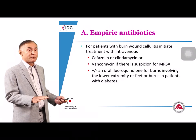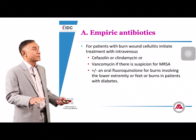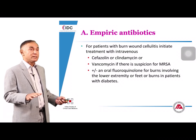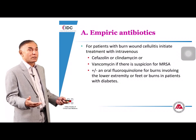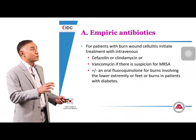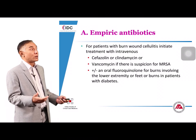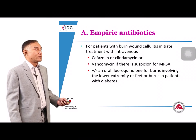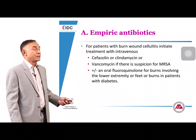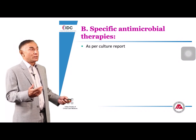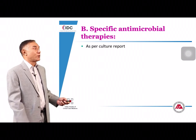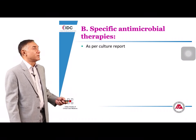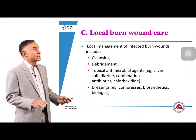For patients without systemic sepsis, especially early on with burn wound cellulitis, the organisms are largely gram-positive Streptococcus and Staphylococcus, so narrow-spectrum agents like cefazolin or clindamycin will often suffice. Once cultures are available, therapy should be escalated or deescalated based on antimicrobial sensitivities. Local burn care involves cleansing, debridement, topical antimicrobial agents, and dressings, but most importantly, excision of the burn wound.